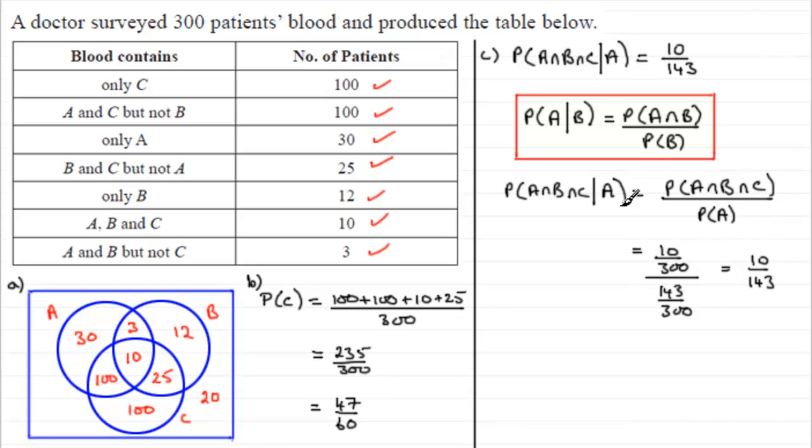This method, though, is a lot longer. I would only use this type of method if I was doing, say, a tree diagram problem. But when I've got Venn diagram problems, you can just spot this straight away.